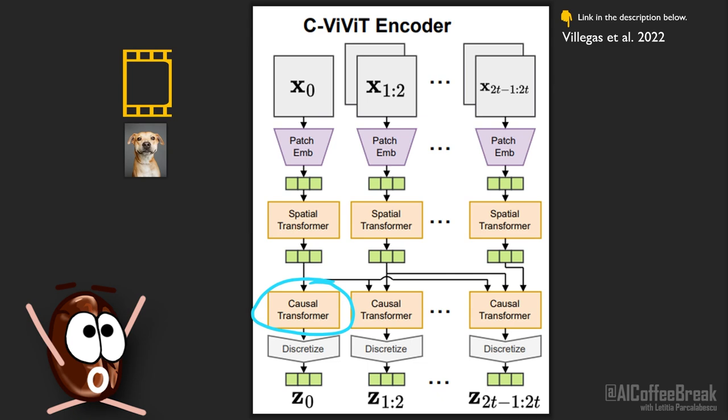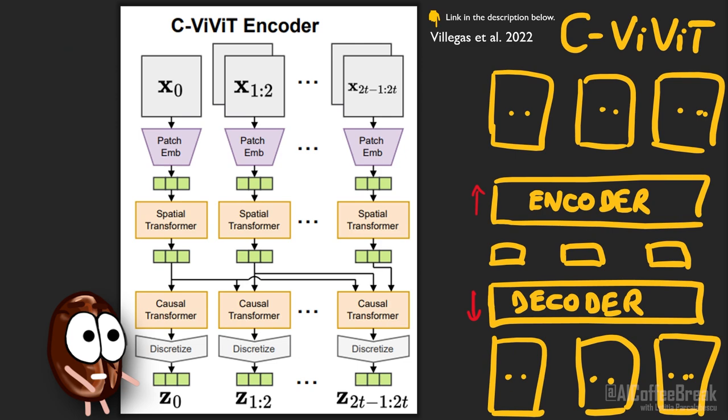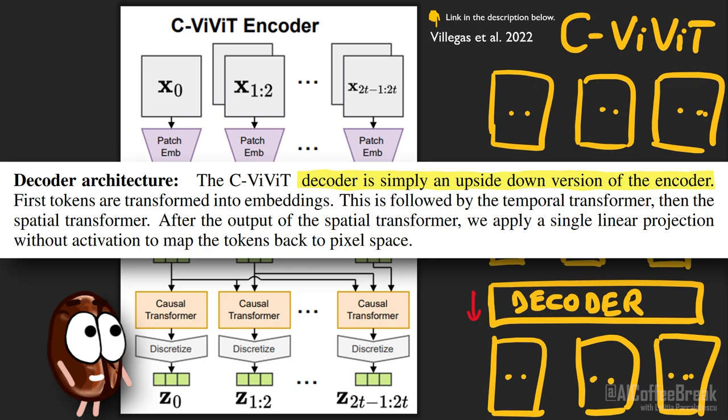The CViViT decoder is — to quote the authors — an upside-down version of the encoder, meaning that all the encoder operations are applied in the reverse direction in the decoder to map back to the pixel space of the video.